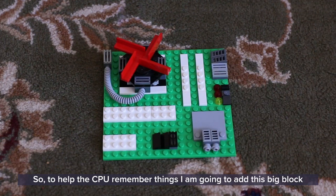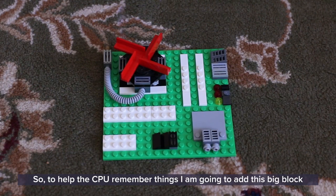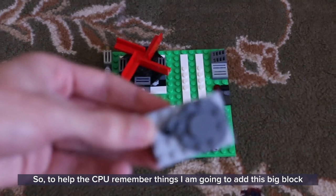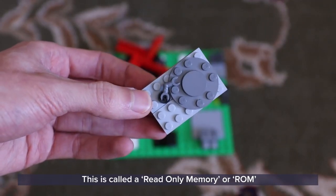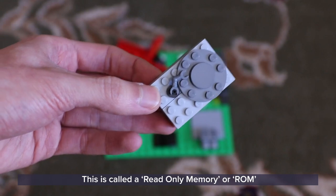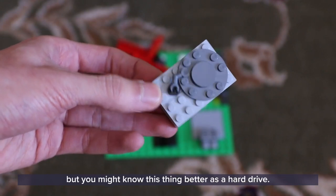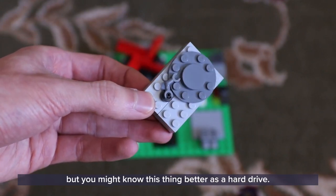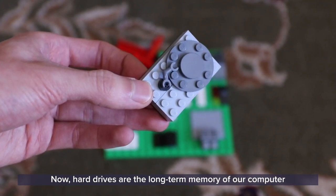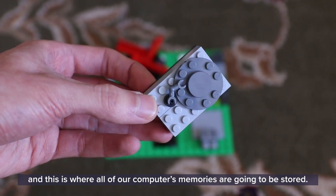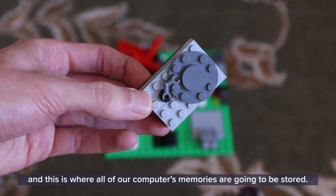So to help the CPU remember things, I am going to add this big block to our computer. This is called a read only memory or ROM, but you might know this thing better as a hard drive. Now, hard drives are the long term memory of our computer and this is where all of our computer's memories are going to be stored.